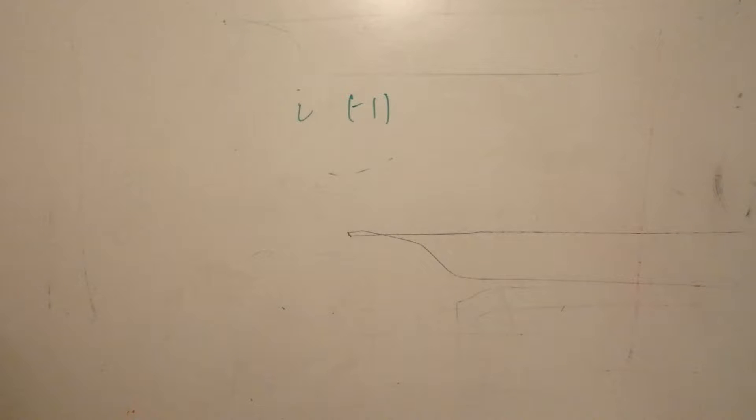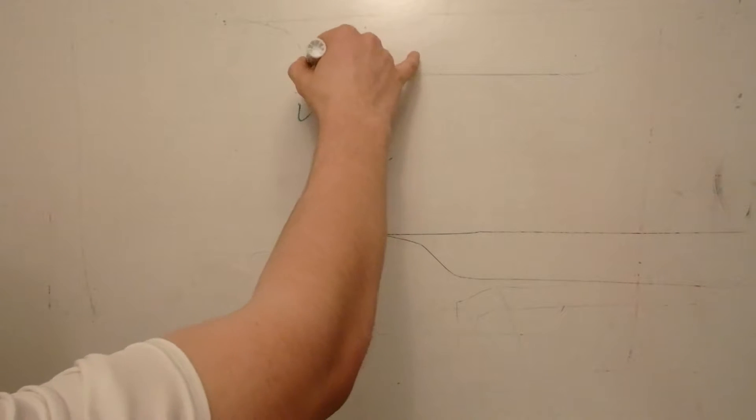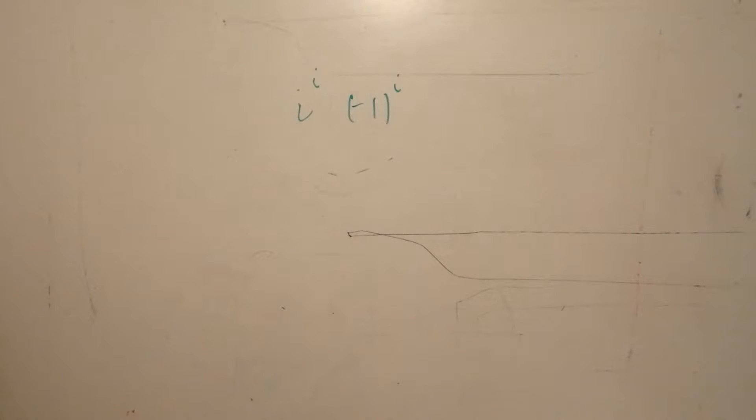i and minus one are both important numbers because we can take these to the imaginary power, and they yield real answers. And we can prove this using the formula we just derived.